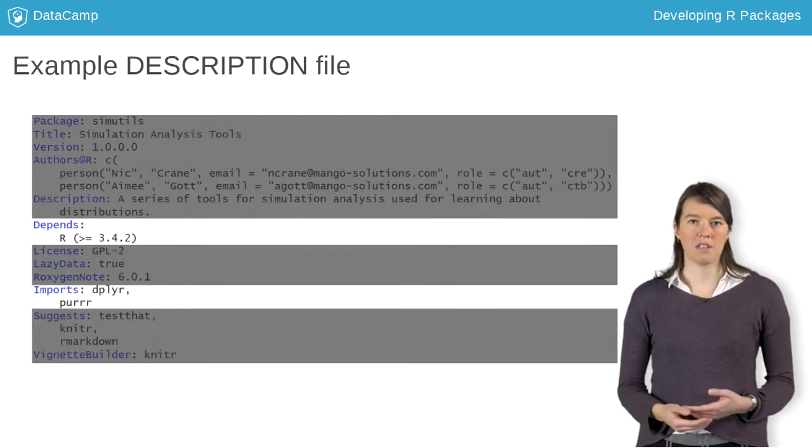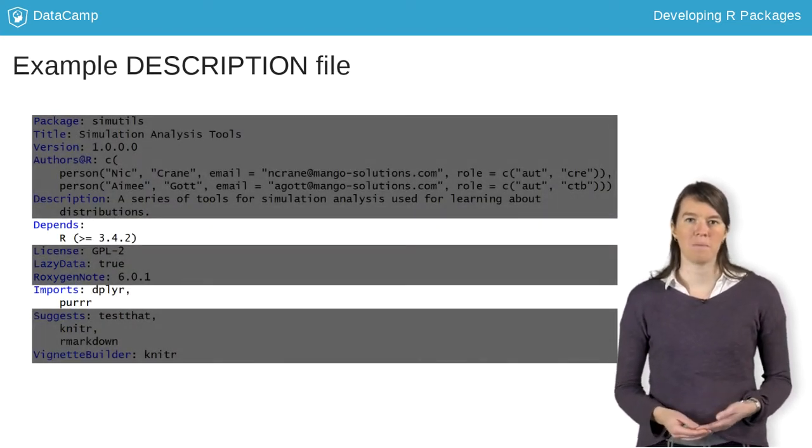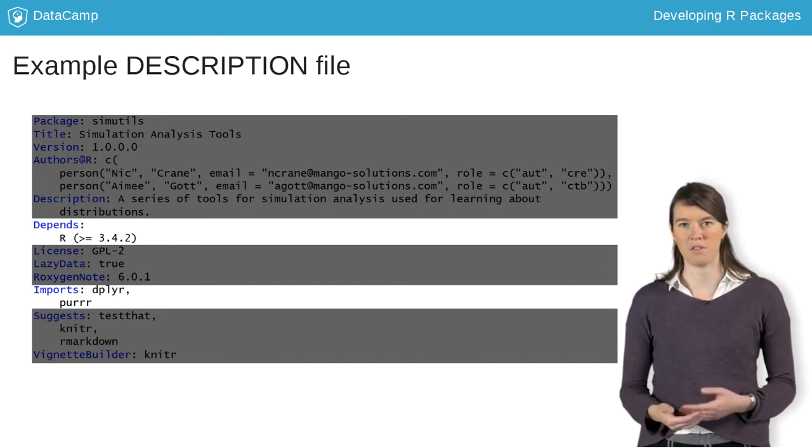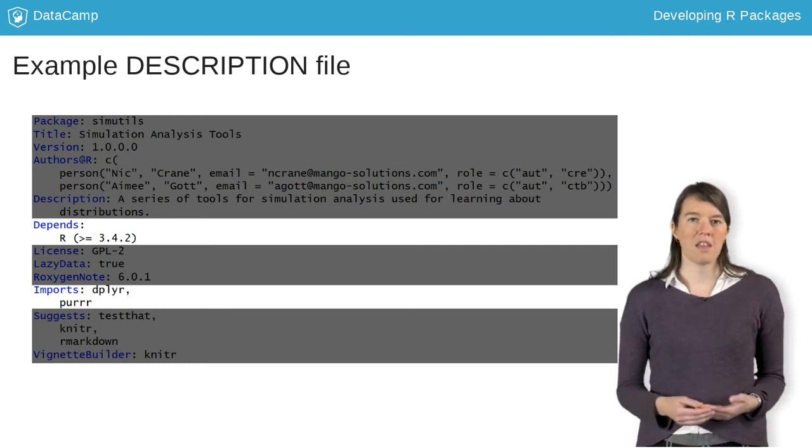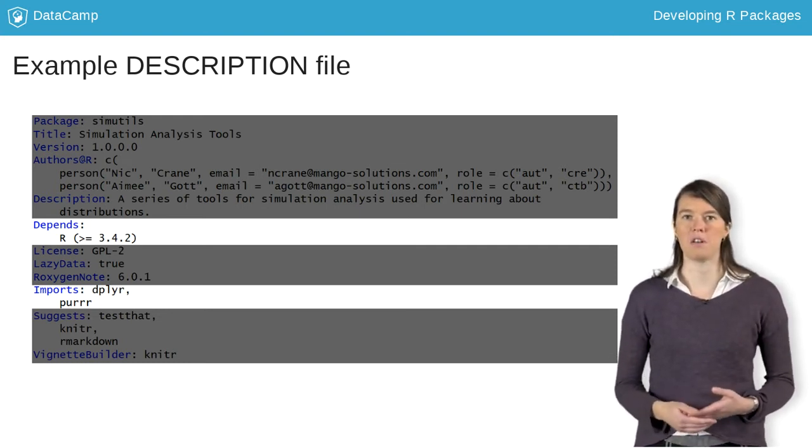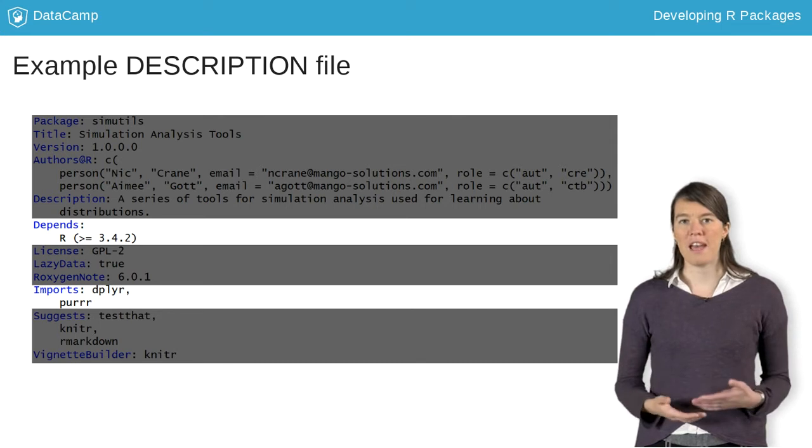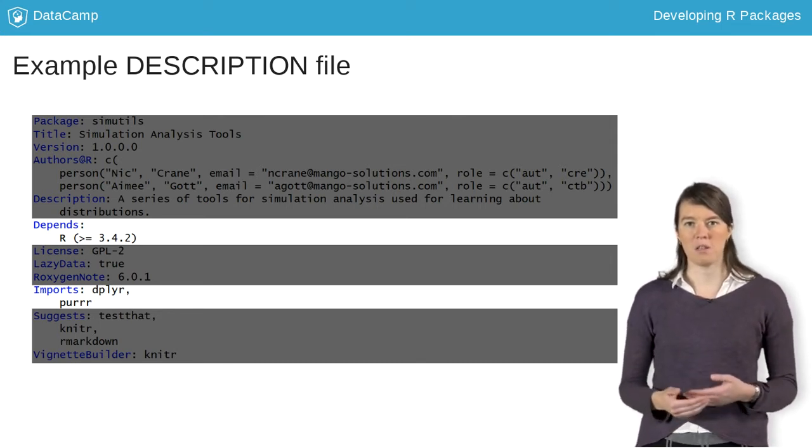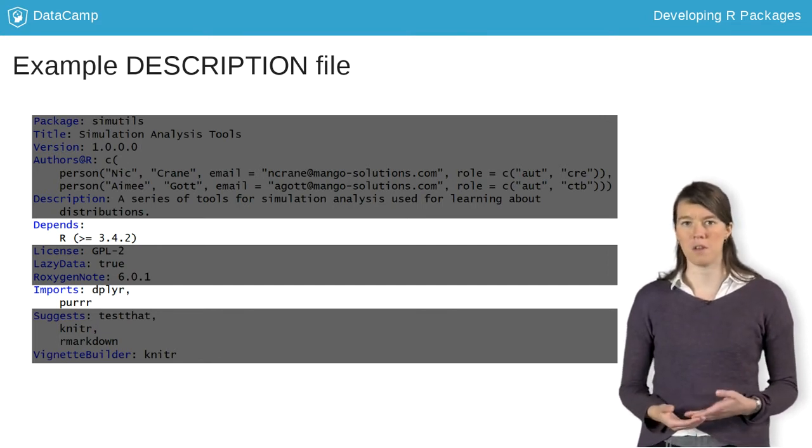The last entries of note are the Depends and Imports fields. These ensure that any other package your package needs is installed and is available to use before someone tries to run the code. You'll be looking at the differences between Depends and Imports later in this course, but for now you can see that the minimum version of R is listed in the Depends field, and other package dependencies are listed in the Imports field.